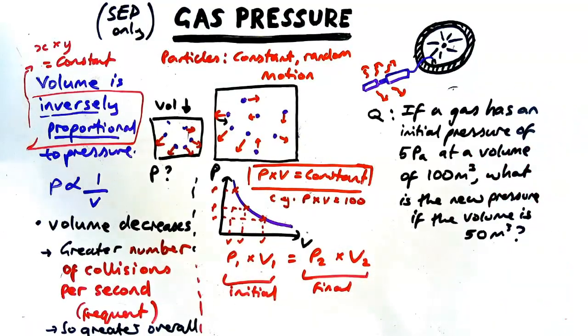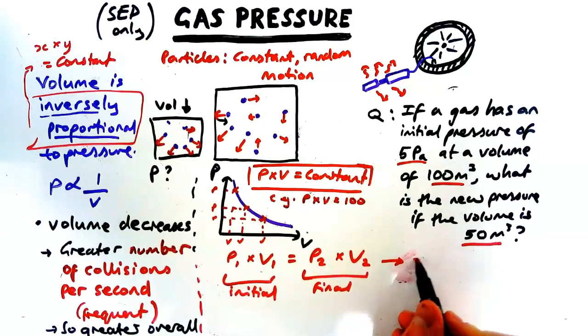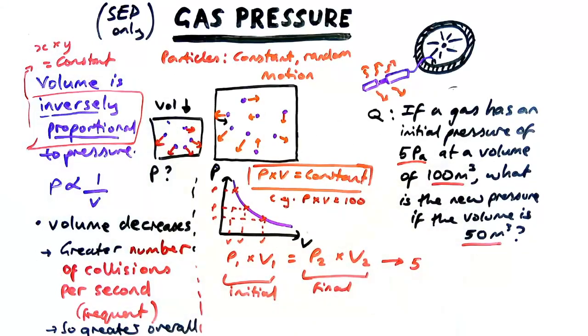Let's have a look at this question here. So a gas has initial pressure of 5 pascals a volume of 100 and then what is the new pressure if the volume halves to 50. So let's put our numbers in. So 5 times 100 is something times 50. We're trying to find the final pressure P2. So let's times the numbers together to make my maths easier. We've got 500 divided by 50 gives us a value of 10 pascals.